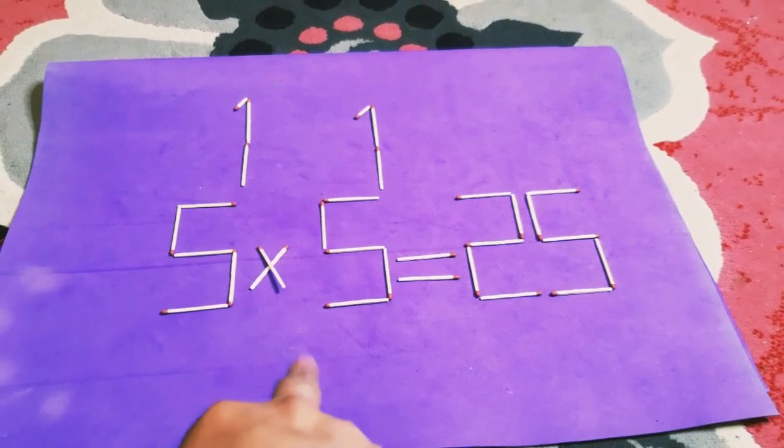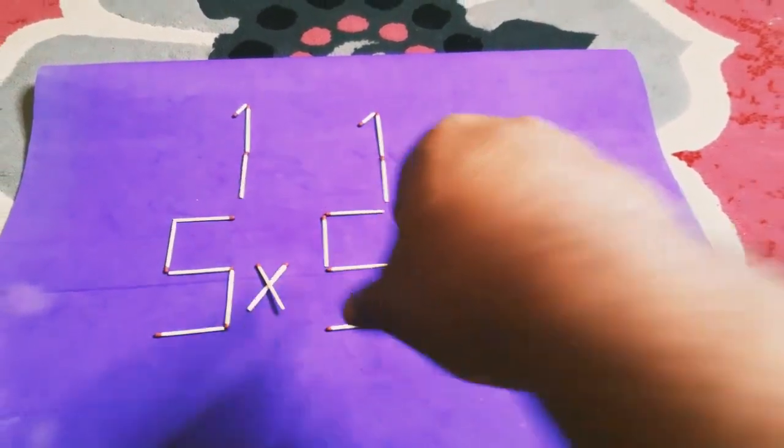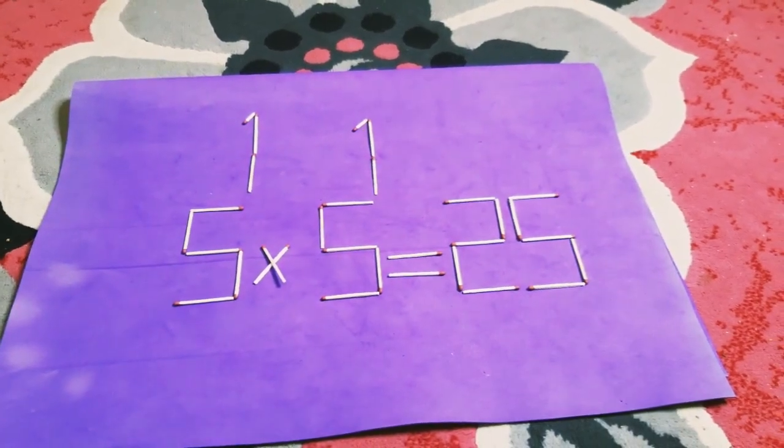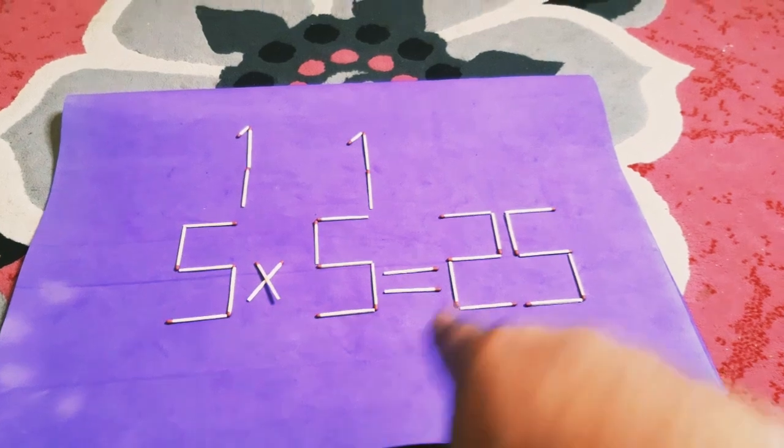So we have 5 to the power of 2, and of course, 5 to the power of 2 equals 25.